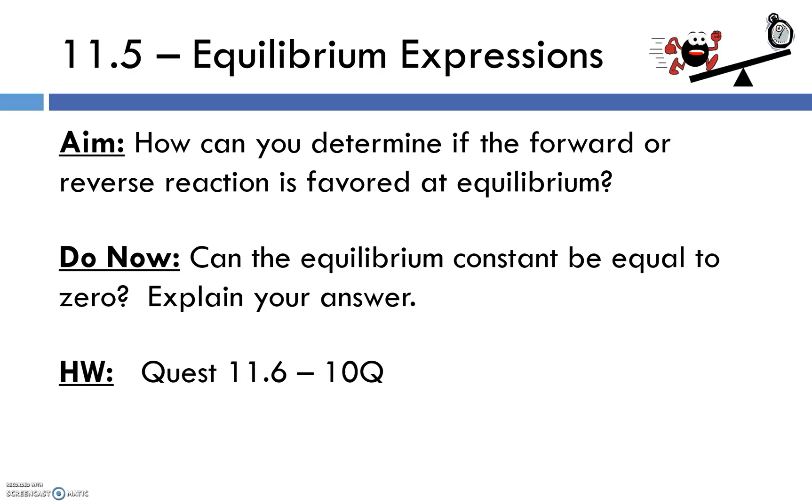Hopefully by now you know that at equilibrium in a reversible system the rate of the forward and the rate of the reverse reaction are equal. That does not mean that we will have equal concentrations of products and reactants. We could have a bunch of reactants still left over that didn't react, and we would say the reverse reaction was favored. Or we might have a large quantity of products and we would say that the forward reaction was favored. So today we are just going to be doing some calculations to figure that out.